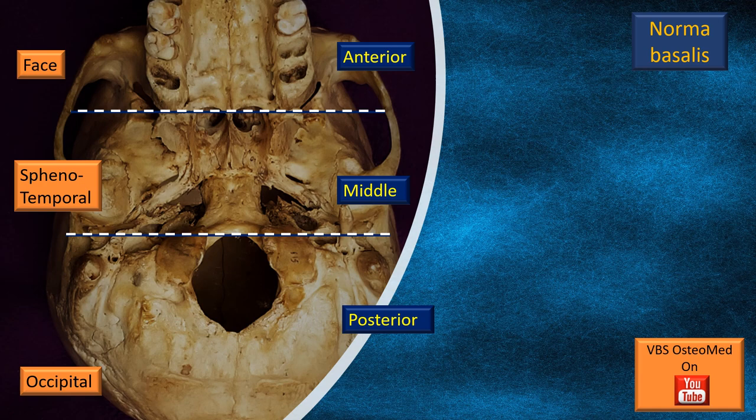In other words, we can also call these the base of skull facial region, the middle region or the sphenotemporal region — because these are the two bones that dominate in this area — and a posterior or occipital region. These are the three regions, of which in this part we will take up the anterior, or the region of the facial skeleton.